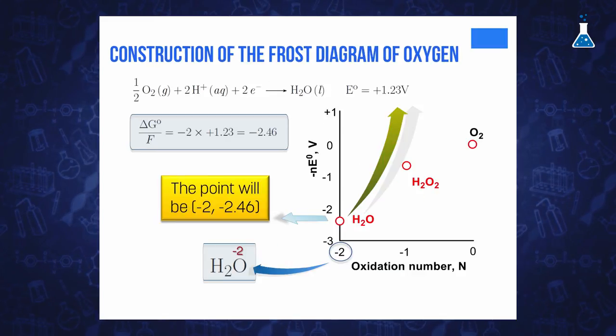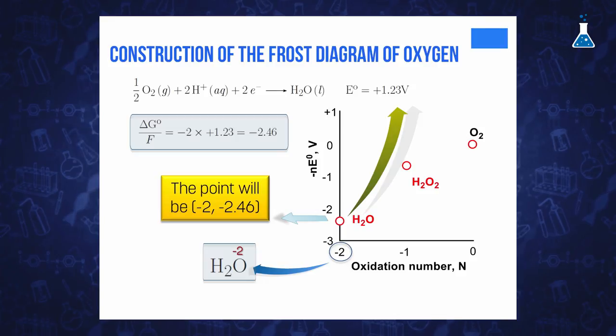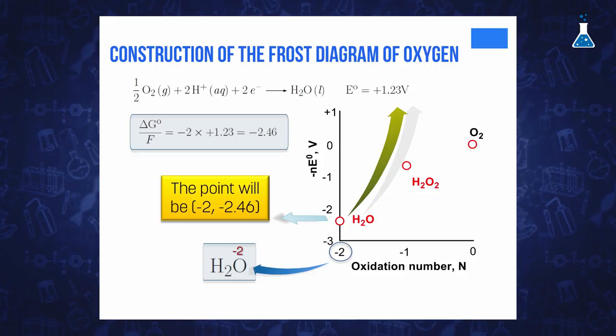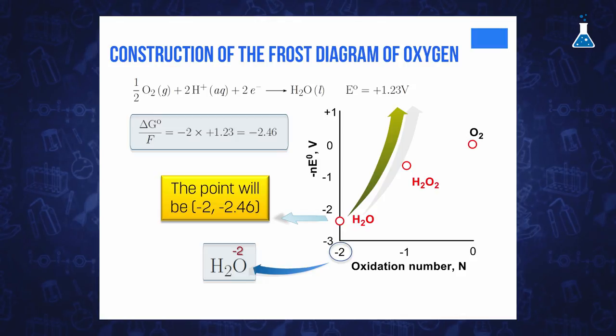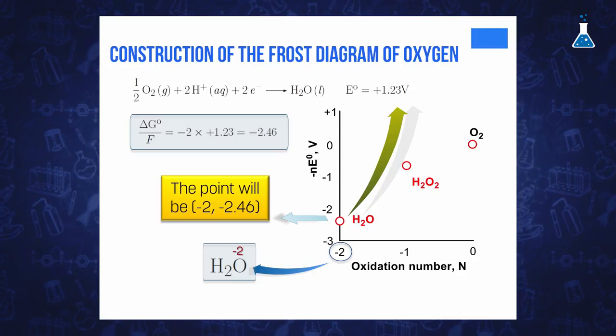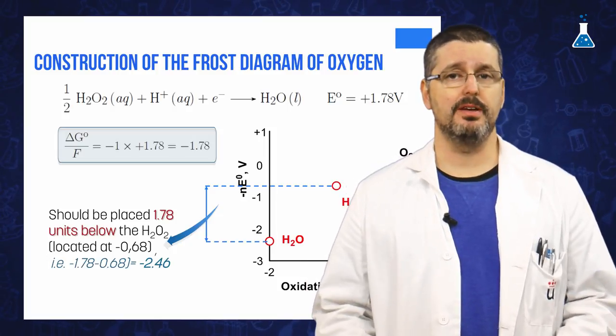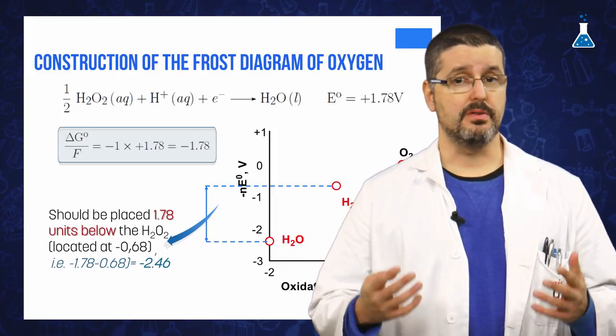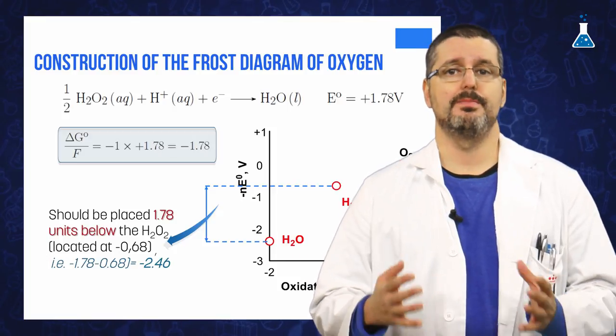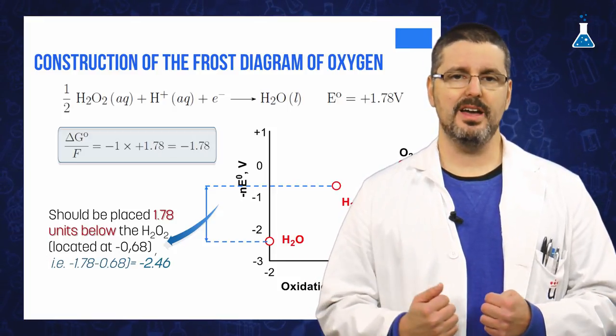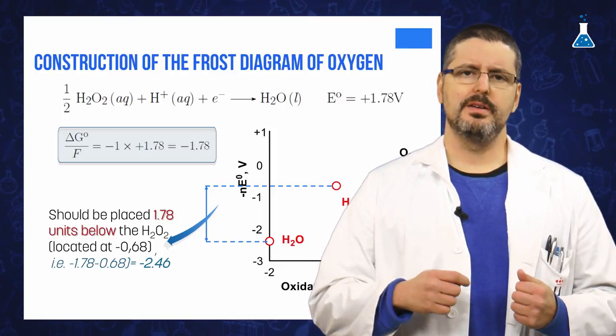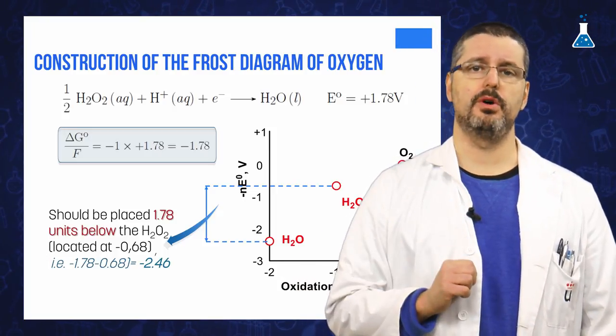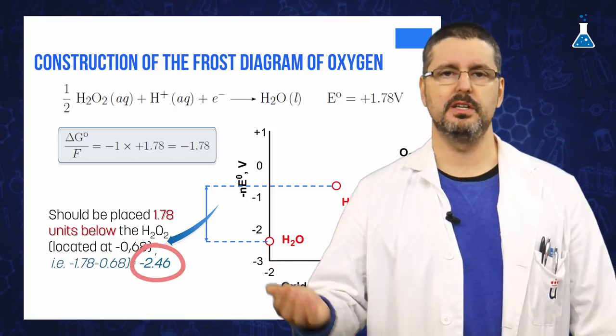The following point of the diagram will be the point for water, (-2, -2.46), corresponding to an oxidation number for water of -2, and the result of multiplying the number of exchanged electrons, two for that reaction, with the electrode reduction potential. Alternatively, this point can be obtained by employing the electrode reduction potential of the reduction of hydrogen peroxide to water. In that case, the number of exchanged electrons is one, that multiplied by the potential 1.78 and changing the sign gives -1.78, that is, the point will be 1.78 units below the previous point, therefore, -2.46 units below the origin.